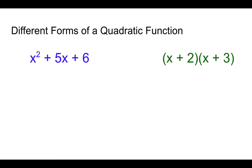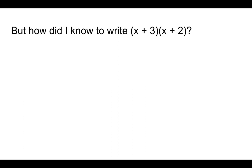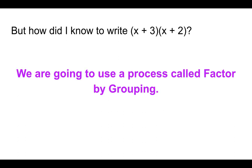These are both quadratic functions because they have an x squared when they are multiplied out. The one on the left is called standard form. The one on the right is called factored form. But how did I know to write it like this? We're going to use a process called factor by grouping to figure out how I knew x plus 3 times x plus 2 was equivalent to my original without graphing.